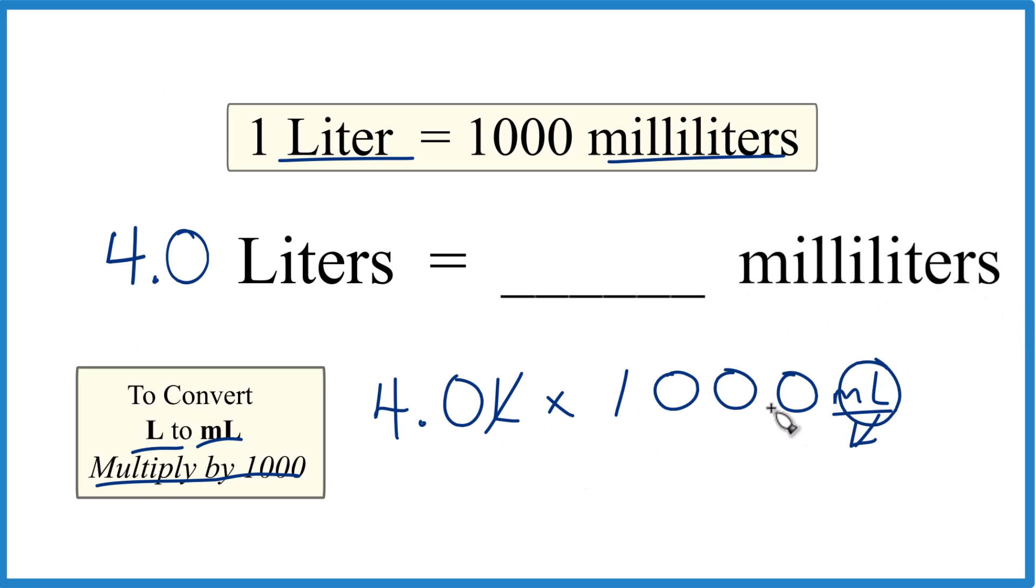So 4.0, or 4 times 1,000, that gives us 4,000 milliliters. So in answer to our question, 4.0 liters is 4,000 milliliters.